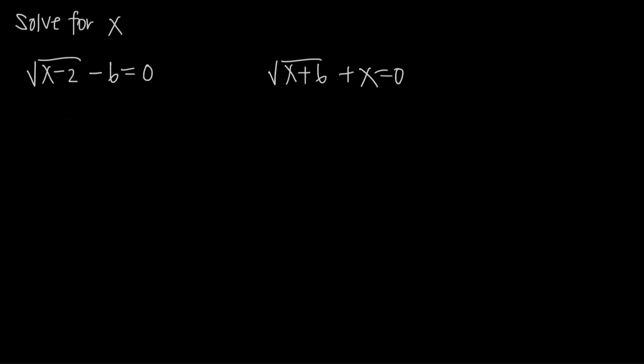In this video we're talking about how to solve radical equations, and there are two really important things to remember. The first is you're always trying to isolate the radical onto its own side of the equation, so that you can square both sides. When you square a square root, those two things cancel, leaving just what's inside the square root — that's how we eliminate the square root sign to solve for our variable.